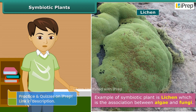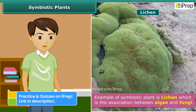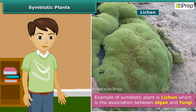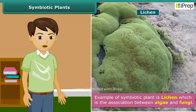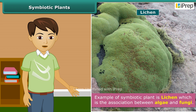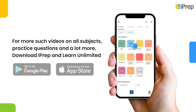Lichen is a good example of a symbiotic relationship. Lichen is the association between algae and fungi. In this kind of relationship, algae provide food to fungi, and fungi provide protection, absorbed water, and minerals to algae.